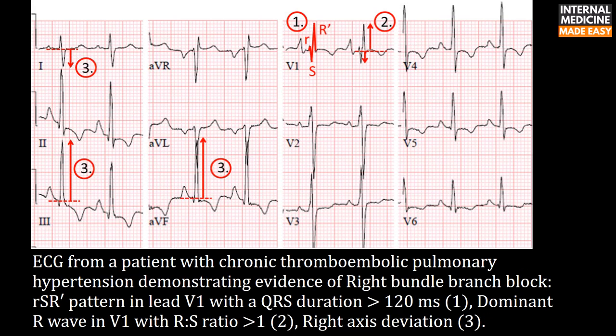This ECG from another patient with chronic thromboembolic pulmonary hypertension demonstrates right bundle branch block: RSR prime pattern in lead V1 with QRS duration more than 120 ms (shown with number 1), dominant R wave in V1 with RS ratio more than 1 (shown with number 2), and right axis deviation in leads I, III, and aVF (shown with number 3).